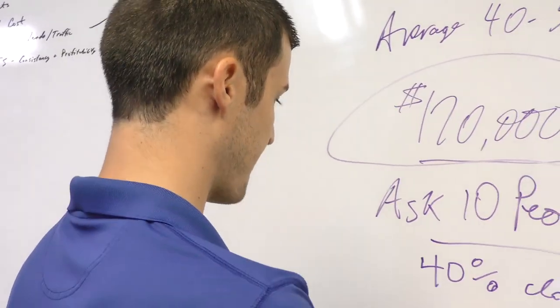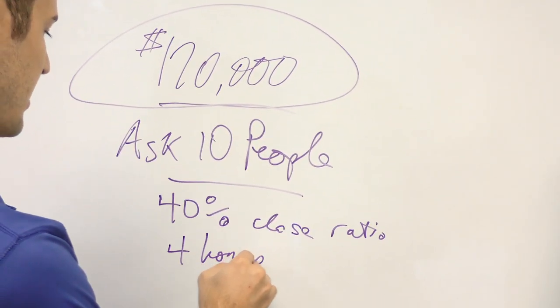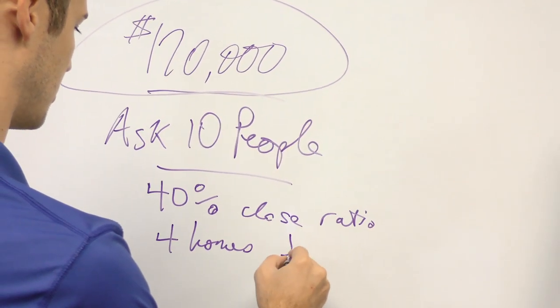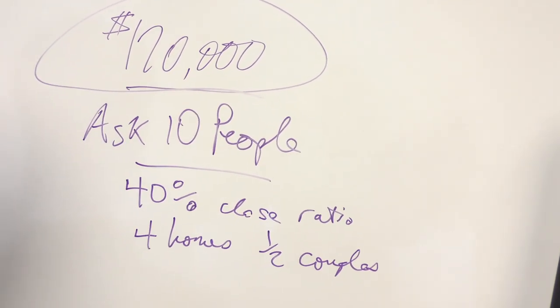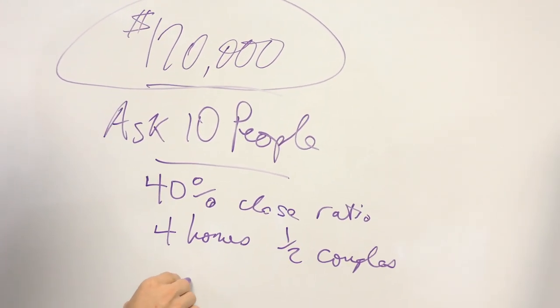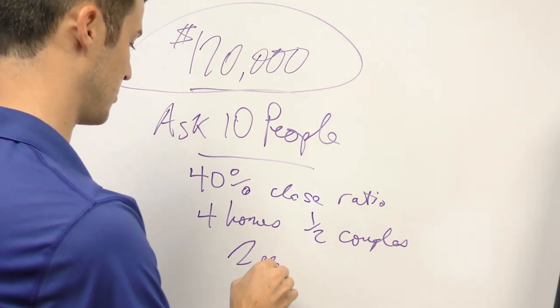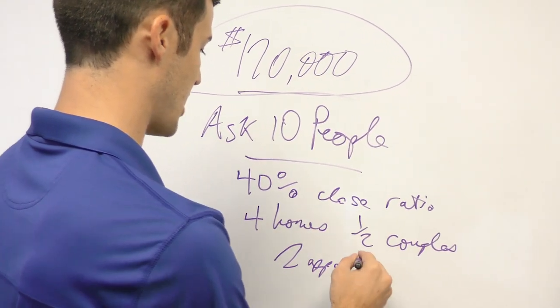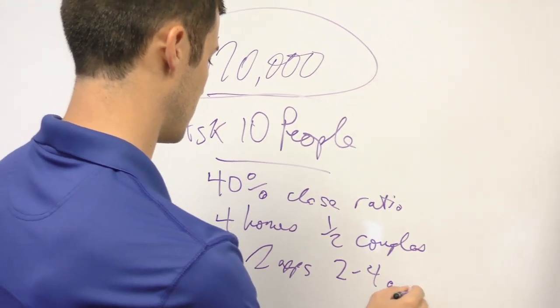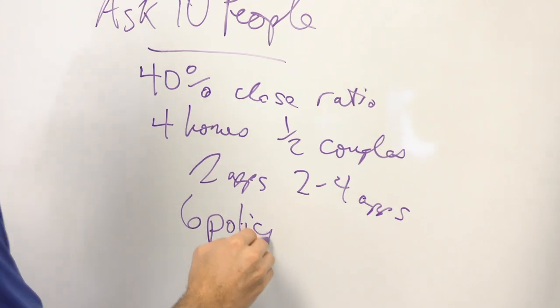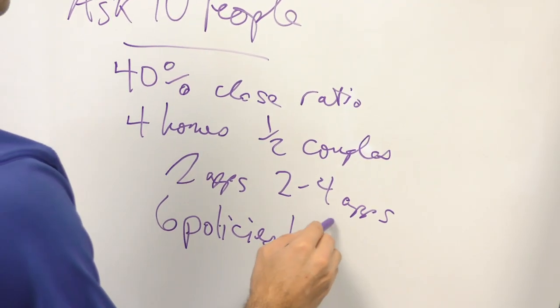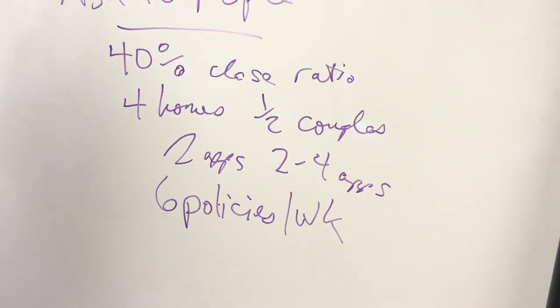So in that case, that's four homes. But let's just say that half of those homes you sold couples. So you had two of the homes, you wrote two apps. But then the other two, you wrote four apps. So in that case, you're writing six policies. I've got the best handwriting in the world. Six policies per week.